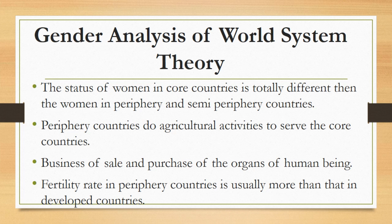Another point that backs women's exploitation under world system theory: the fertility rate in periphery countries is usually higher than in developed countries. Developed countries use various means to control their population, but developing and underdeveloped states don't consider this as much. Resultantly, women produce more children. This is basically in the favor of core countries because these countries get labor from periphery countries — more population means more labor. So women of underdeveloped countries face numerous health issues as they produce more offspring to serve the core countries, which don't consider their condition. When it comes to gender, the world system theory is essentially an exploiter of the rights of different genders, doing so by dividing countries into three different categories.